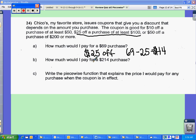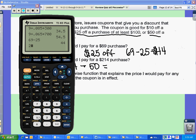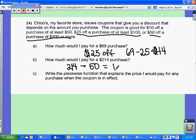Okay, so the second one is $214. So I would get $50 off a purchase of $200 or more. So I'm going to spend at least $200. I'm going to actually spend $214. So I'm going to get $50 off of that. So $214 minus $50 is going to be $164.